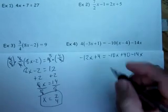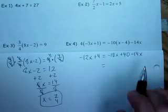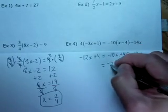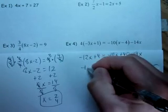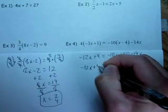This is your opportunity to combine like terms, so your negative 10x and your negative 14x become negative 24x plus 40, keeping the negative 12x plus 4 on the left hand side.